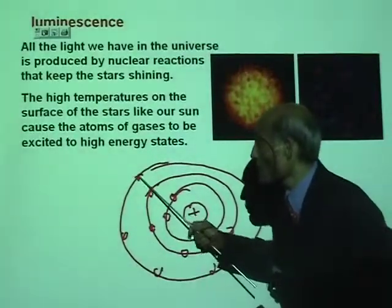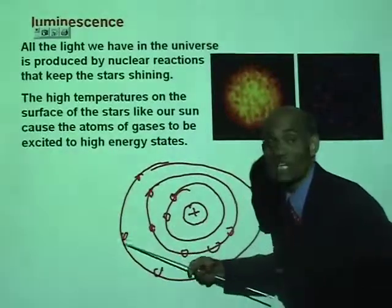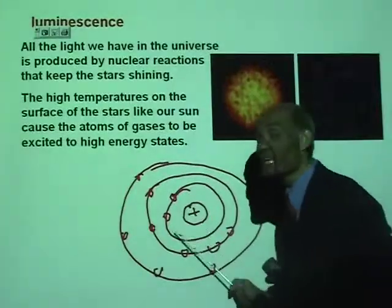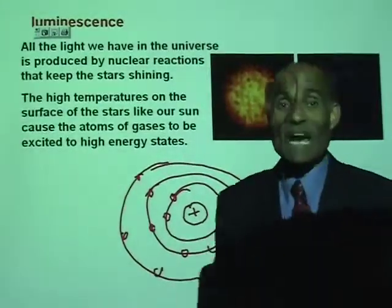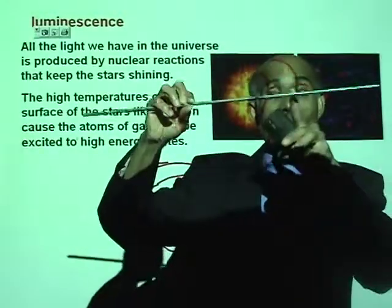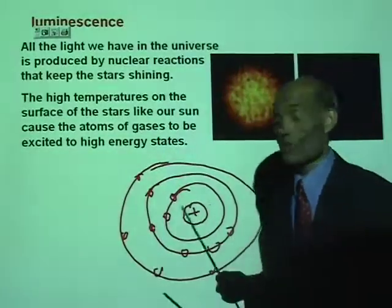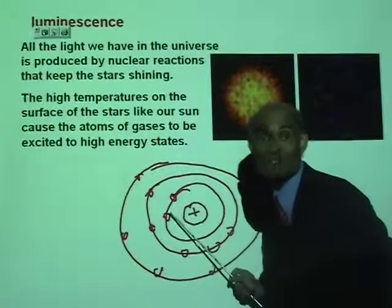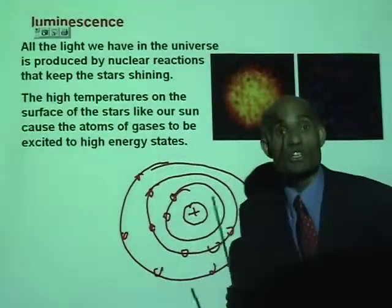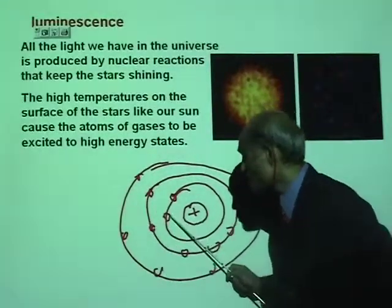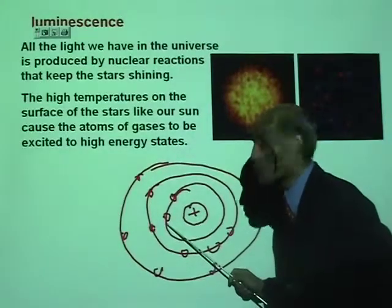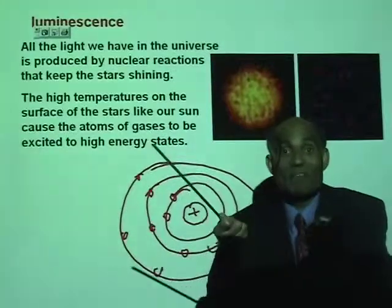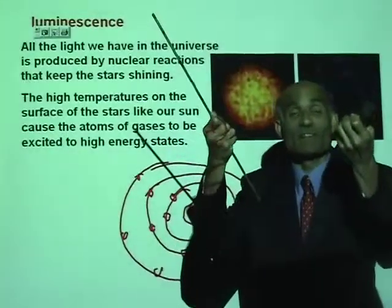In order for an electron to stay in the outer orbit, they need extra energy. Now when you heat an object, you are supplying extra energy. And when the atoms receive extra energy, electrons from the inner orbit will jump to the outer orbit because they all have extra energy.